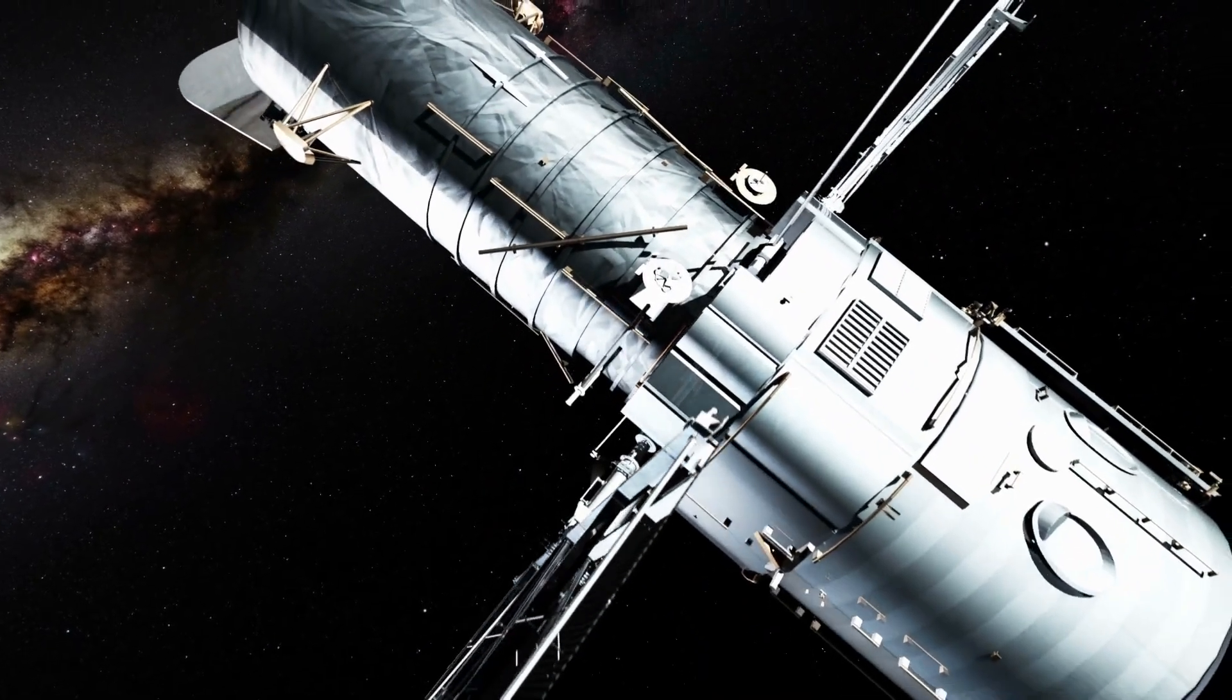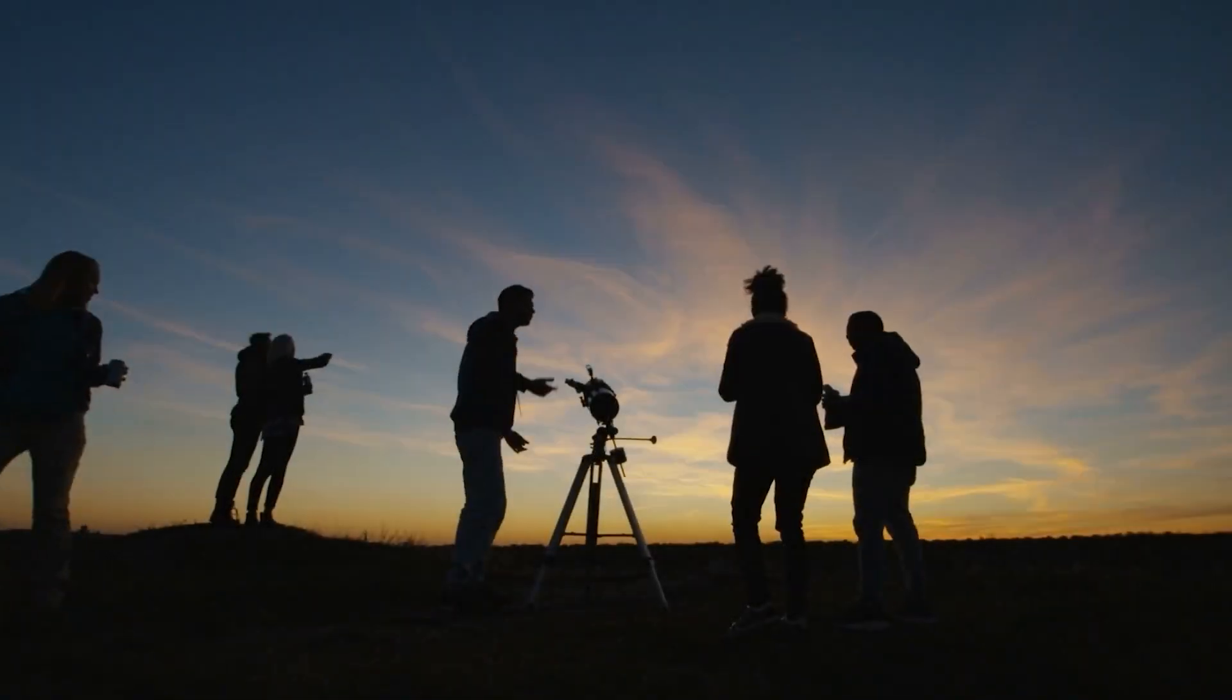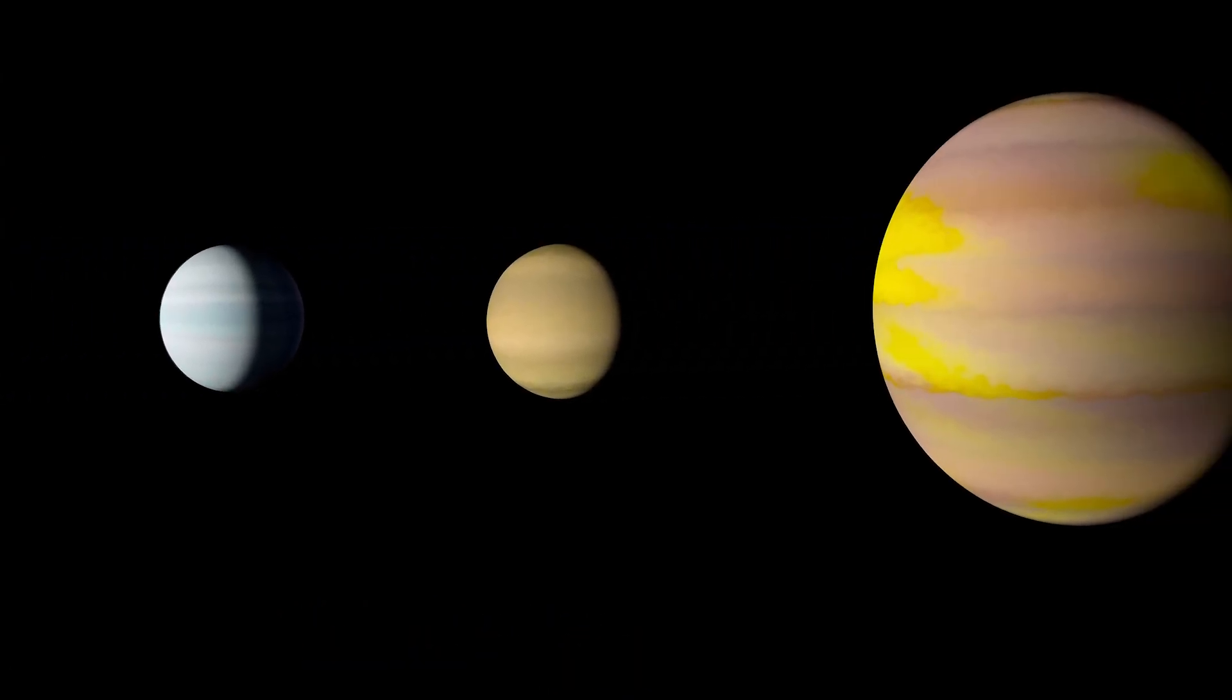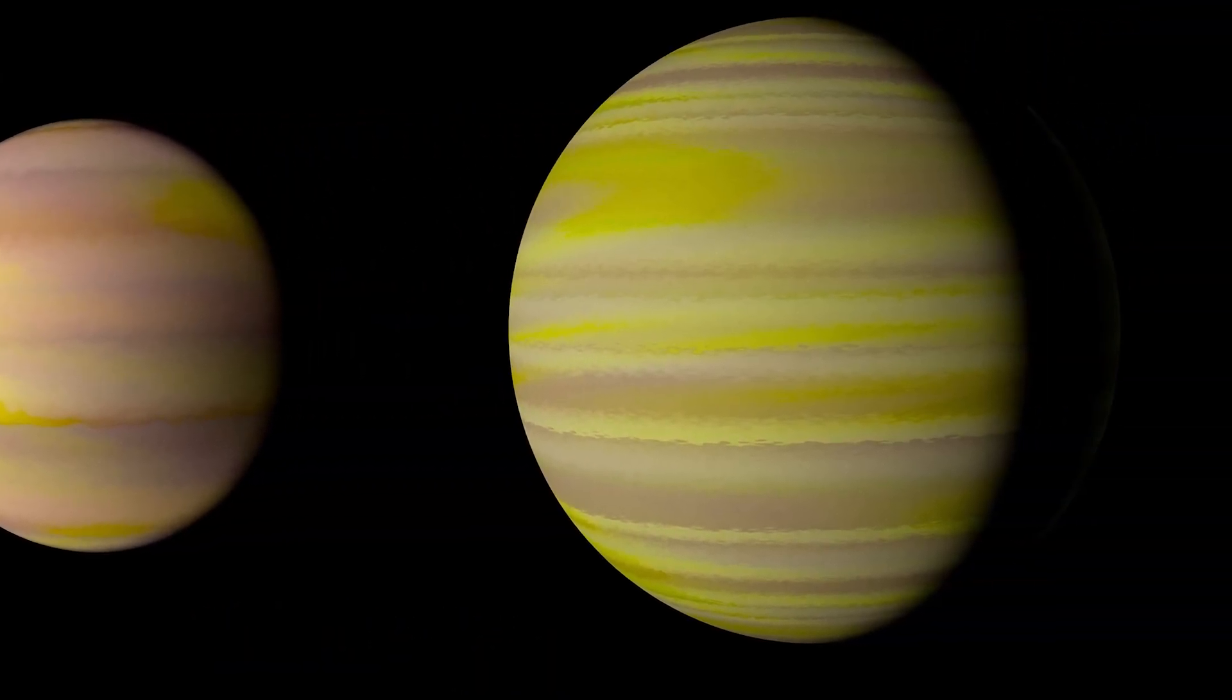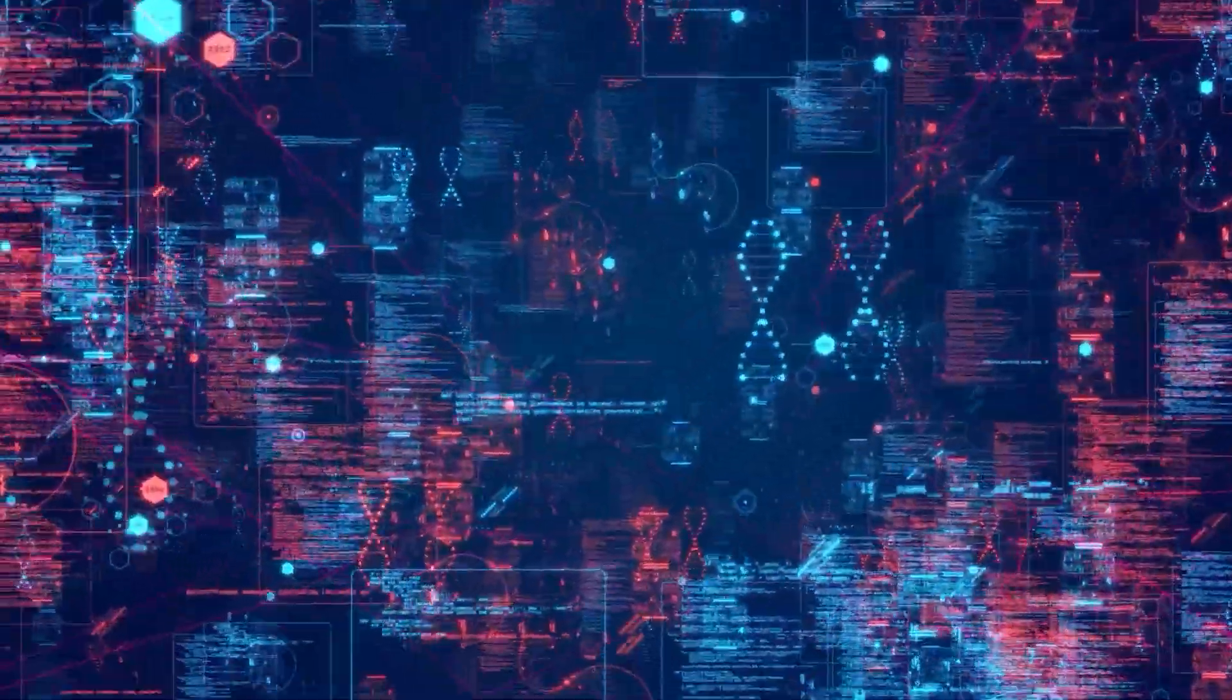AI, however, was able to detect the faint light dip caused by the planet transiting its star. Something subtle that the human eye couldn't catch. Kepler-90i became the eighth planet in its star system, tying it with our own solar system in terms of the number of planets. This discovery was proof that AI could not only speed up analysis, but also uncover hidden worlds that might have otherwise gone unnoticed.